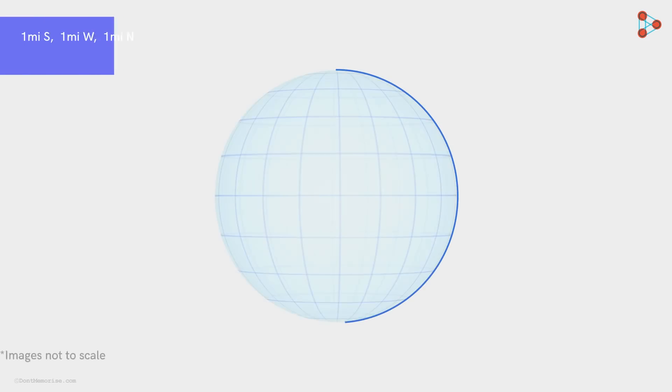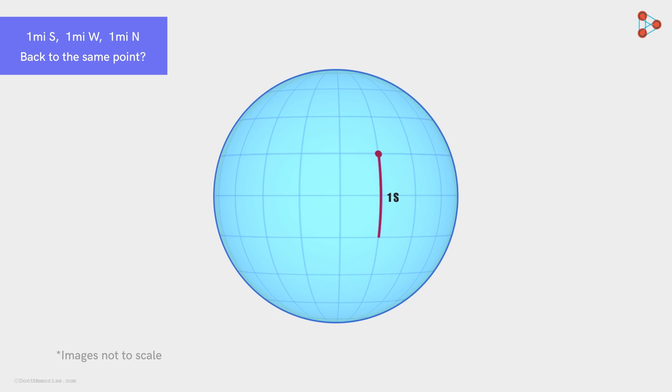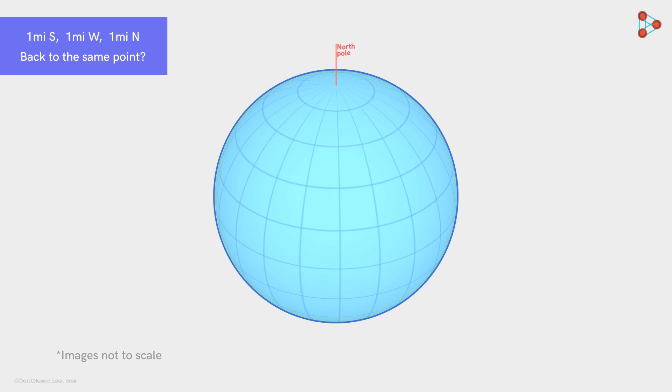Let's try to attempt a solution to the problem and take any random point on earth. As we traverse one mile south, then one mile west and one mile north, we will see that we don't end up at the same point. But what if we were at the north pole?